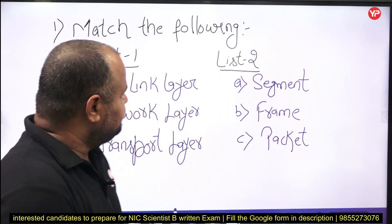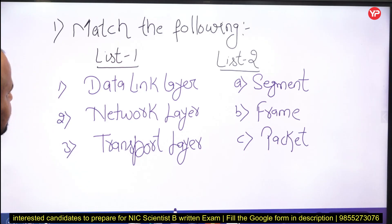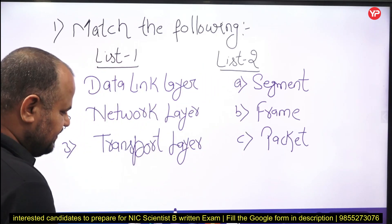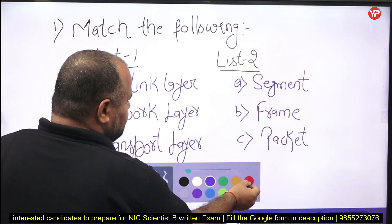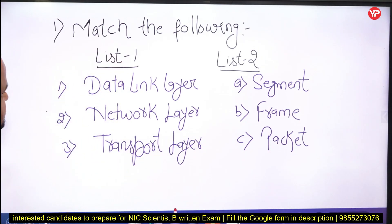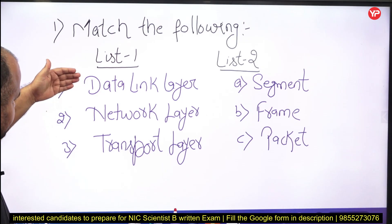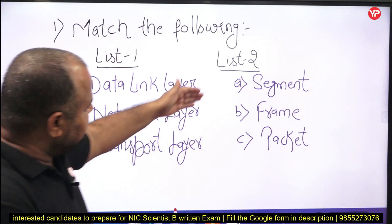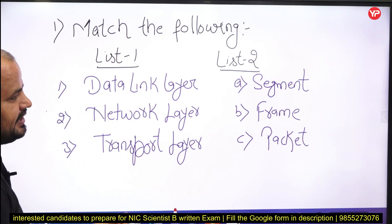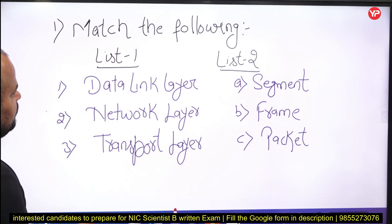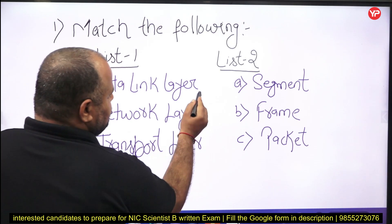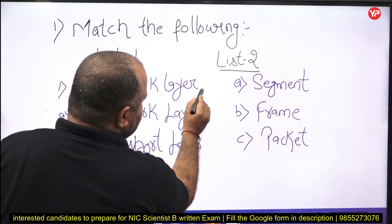Starting with the first problem: match the following. We have List 1 and List 2 and we have to match accordingly. In List 1 we have the layer names and in List 2 their corresponding data packet or data frame names. If I talk about the data link layer, in the data link layer we are talking about the frame.